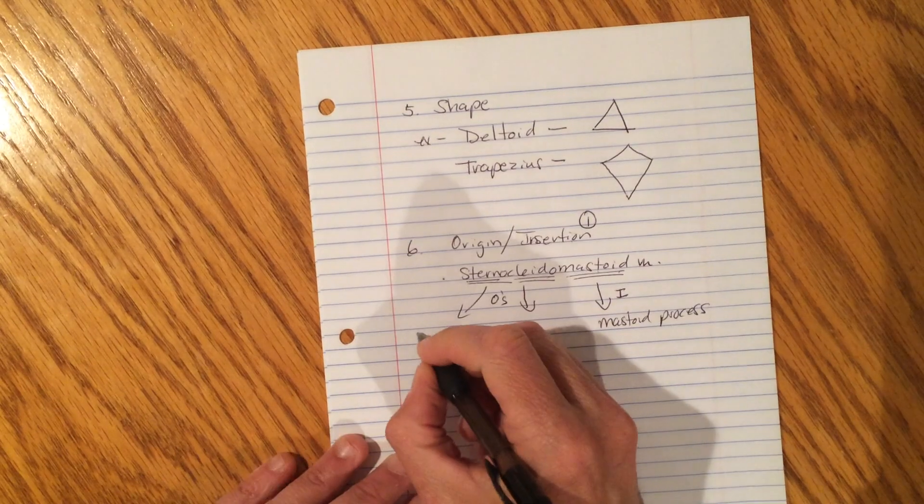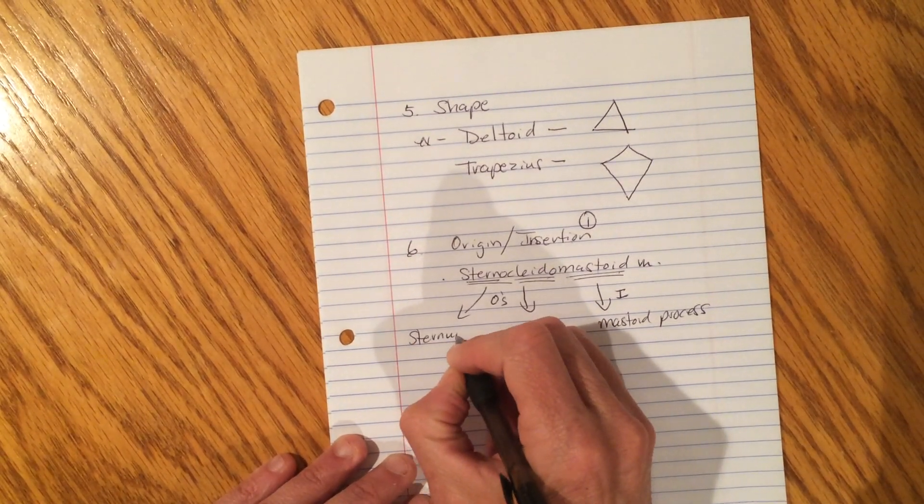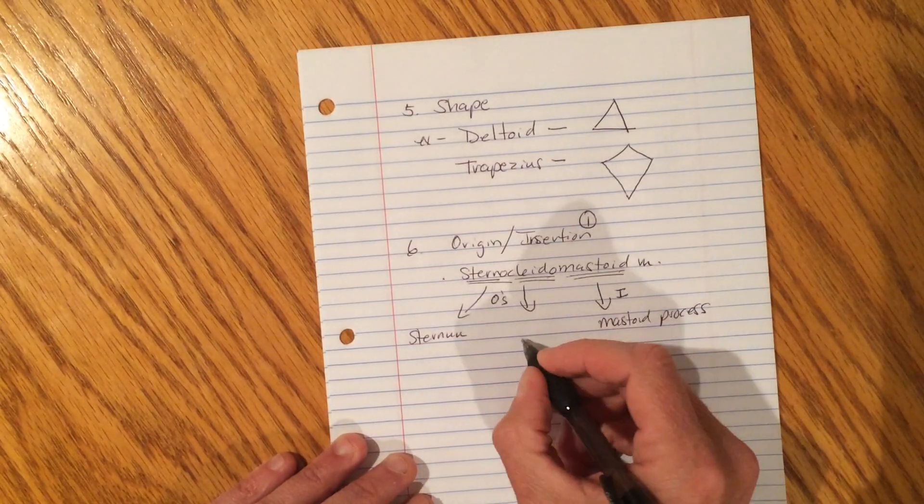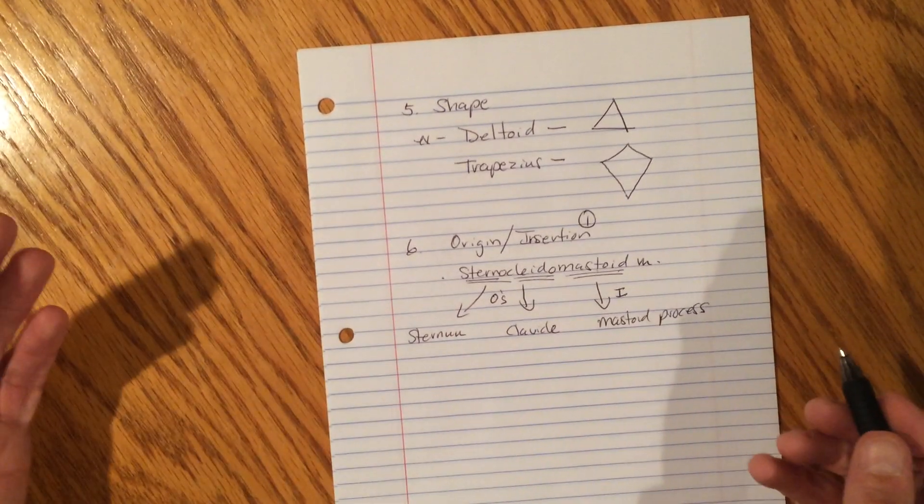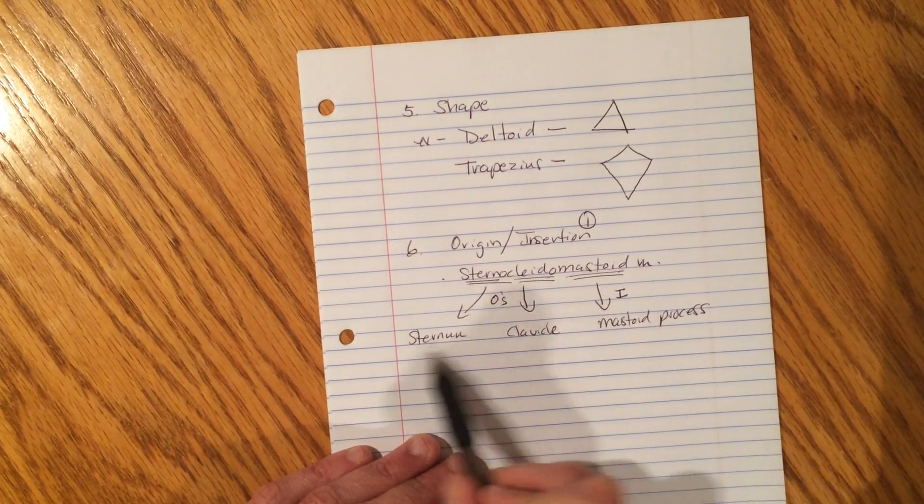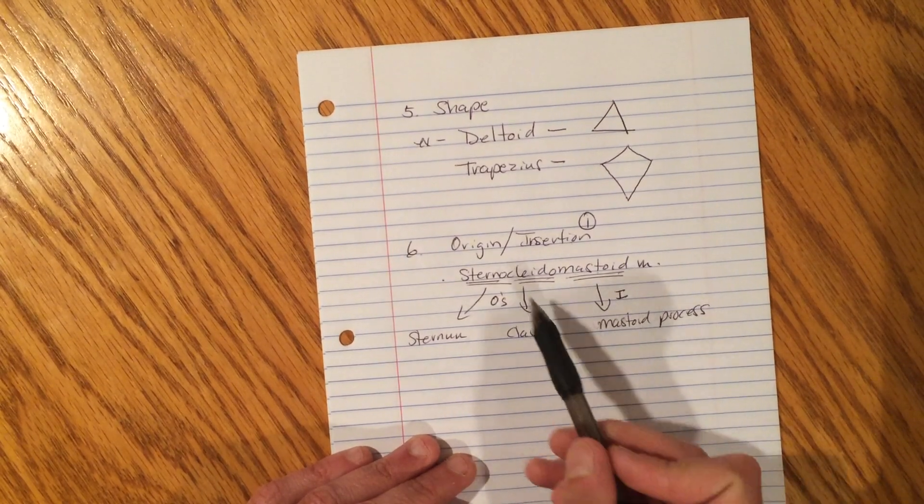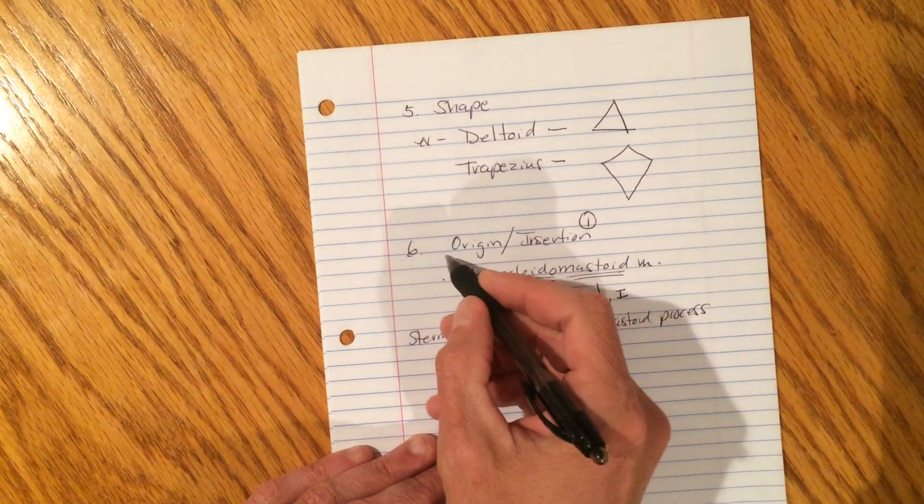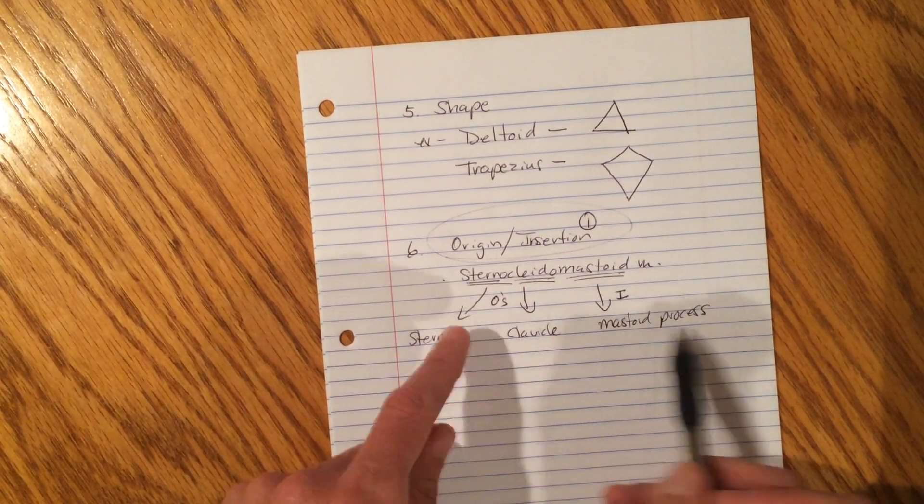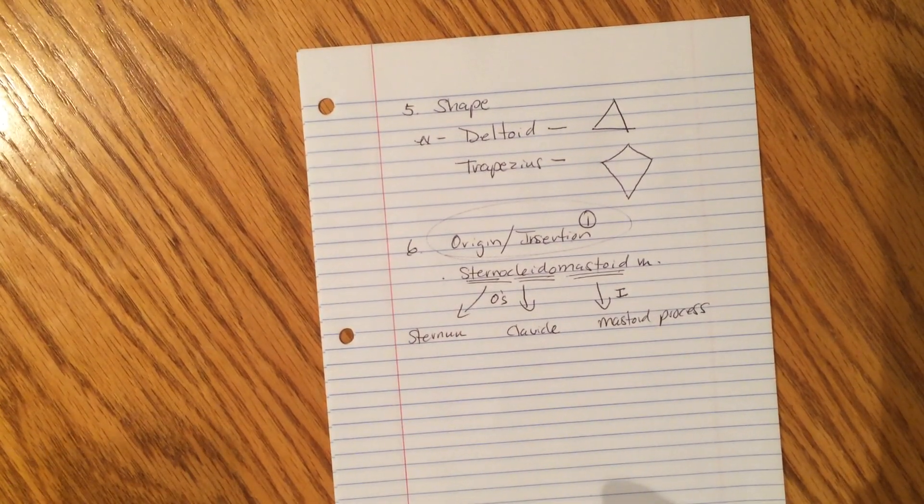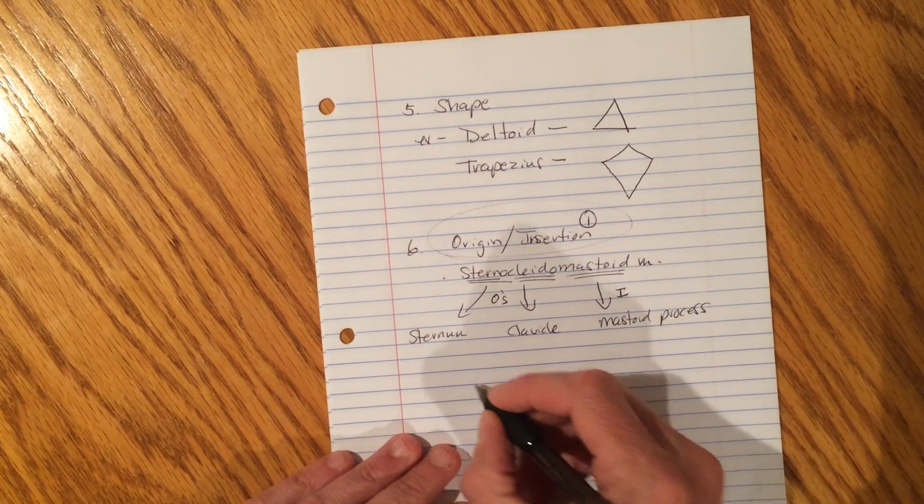So, sterno. What's that refer to? Sternum. Kleido. What's that referred to? Clavicle. And these are all references we made before in class. So, we have two origins, one insertion. So, the sternocleidomastoid is named for everything that it is. And then I'm going to teach you, if you know all of this, you also know the action of the muscle and what it can do. Pretty cool. Let me give you another example.